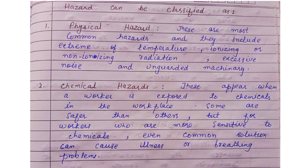Second is Chemical Hazards. These appear when a worker is exposed to chemicals in the workplace — for example, working in a chemicals factory. Some are safer than others, but for workers who are more sensitive to chemicals, even some common solutions can cause illness or breathing problems.